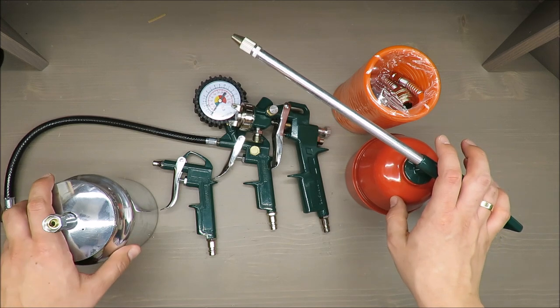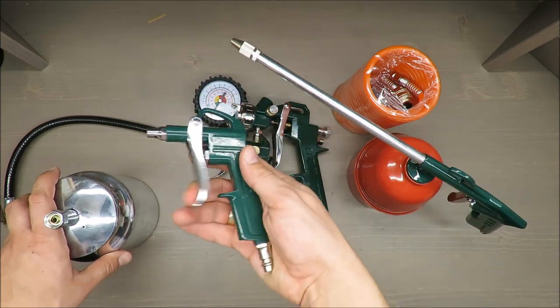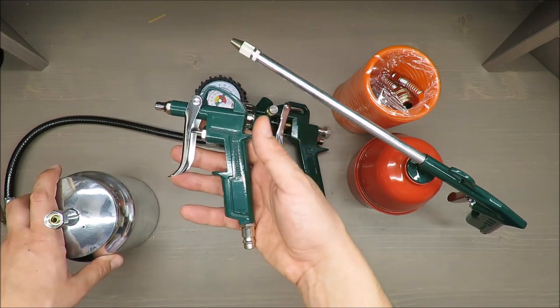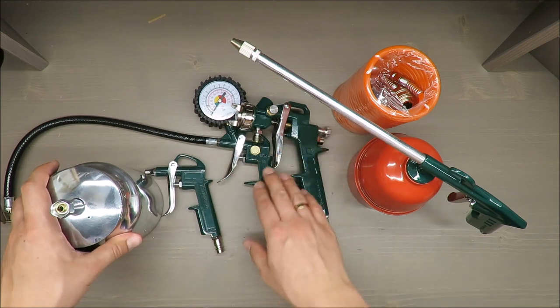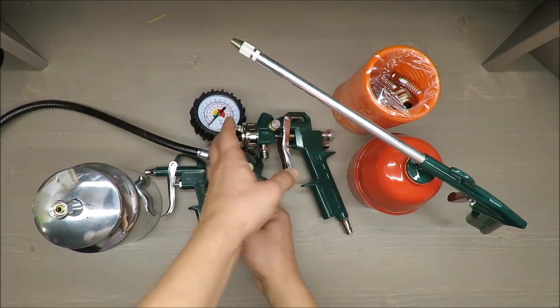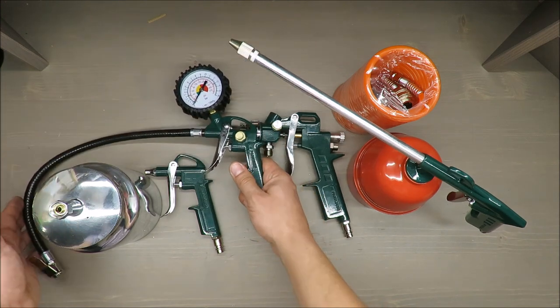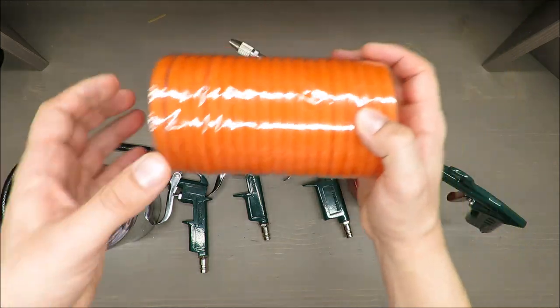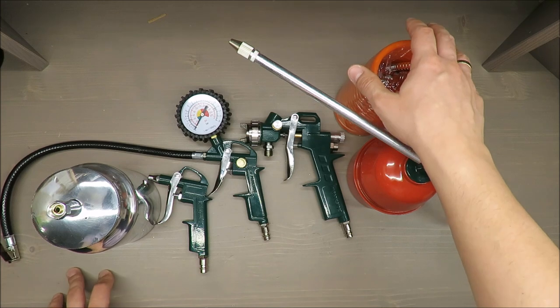The air blow gun has a maximum working pressure of 5 bars. The tire inflator works up to 6 bars, and the air hose is rated up to 8 bars with a length of 5 meters, which is more than enough for DIY usage.